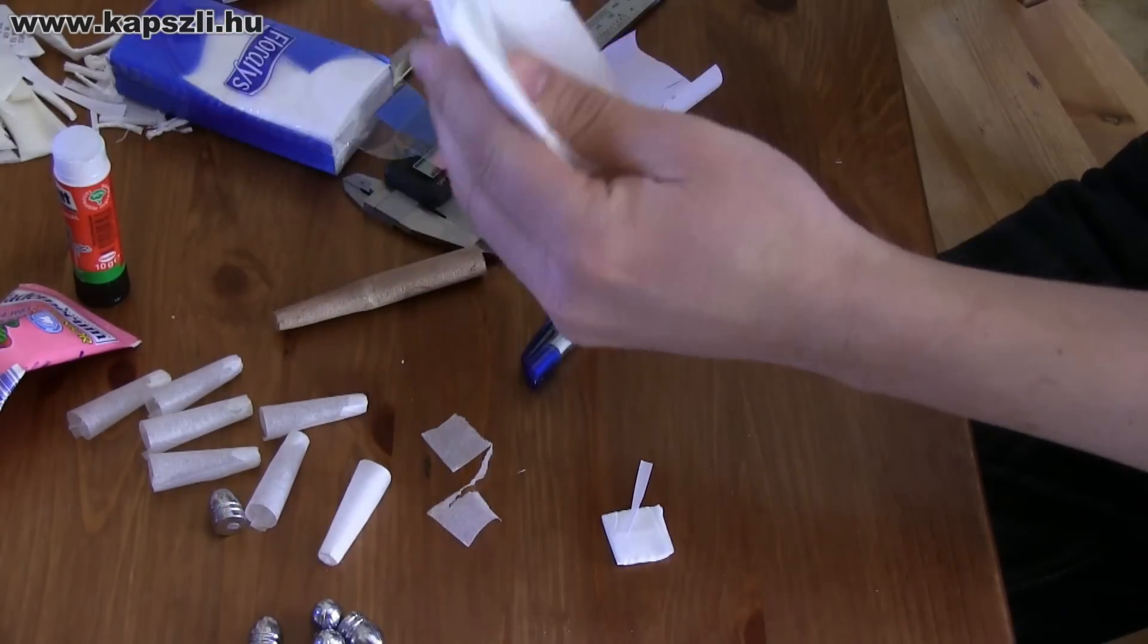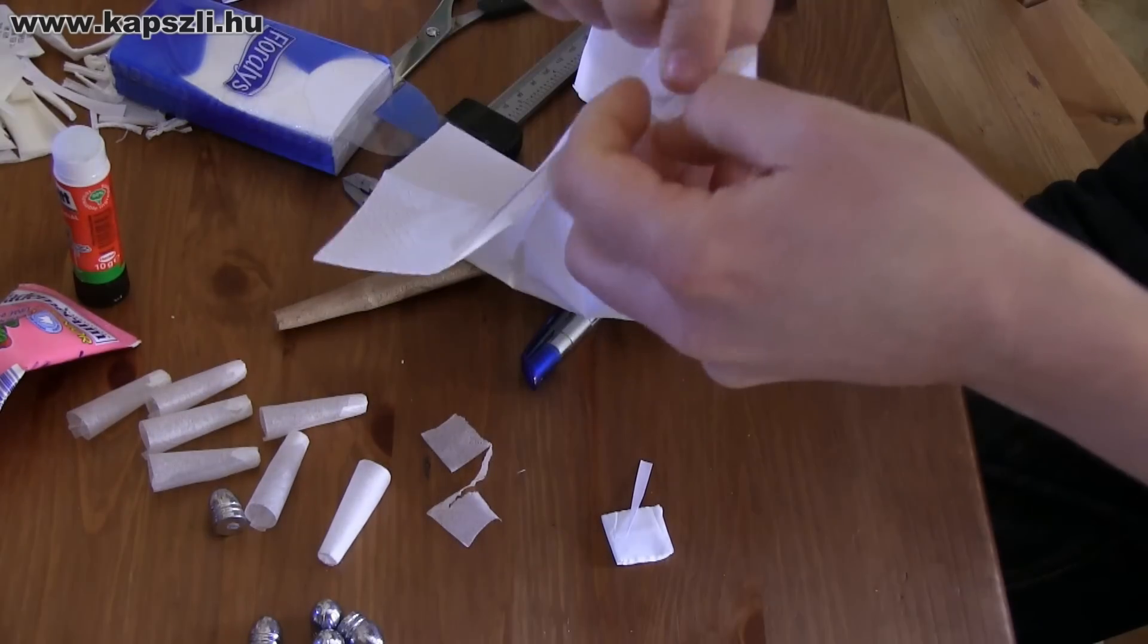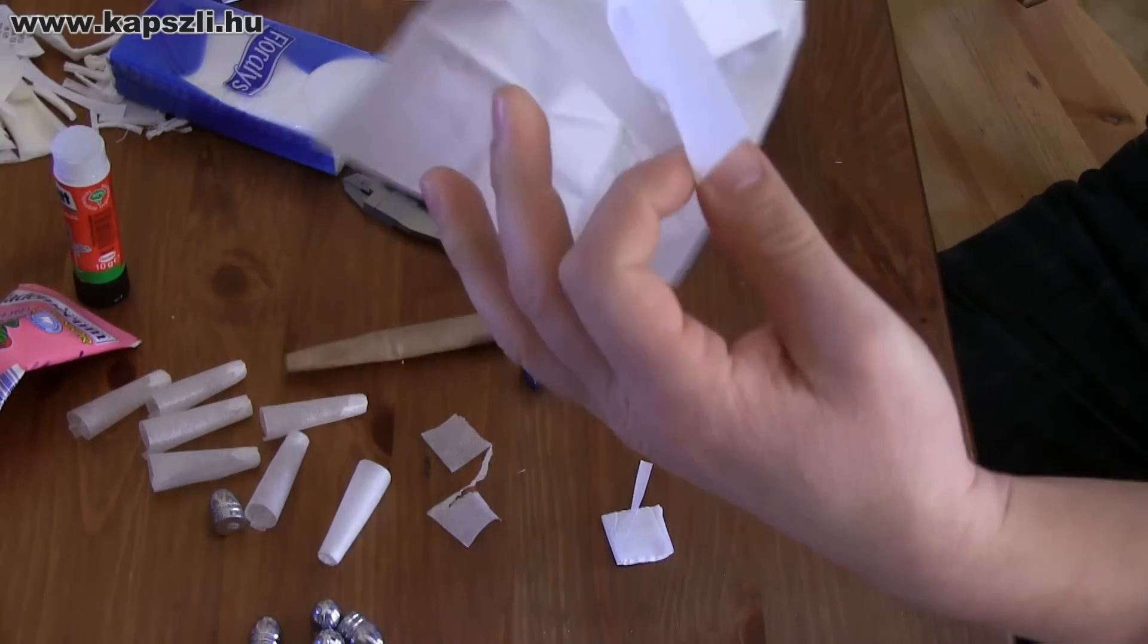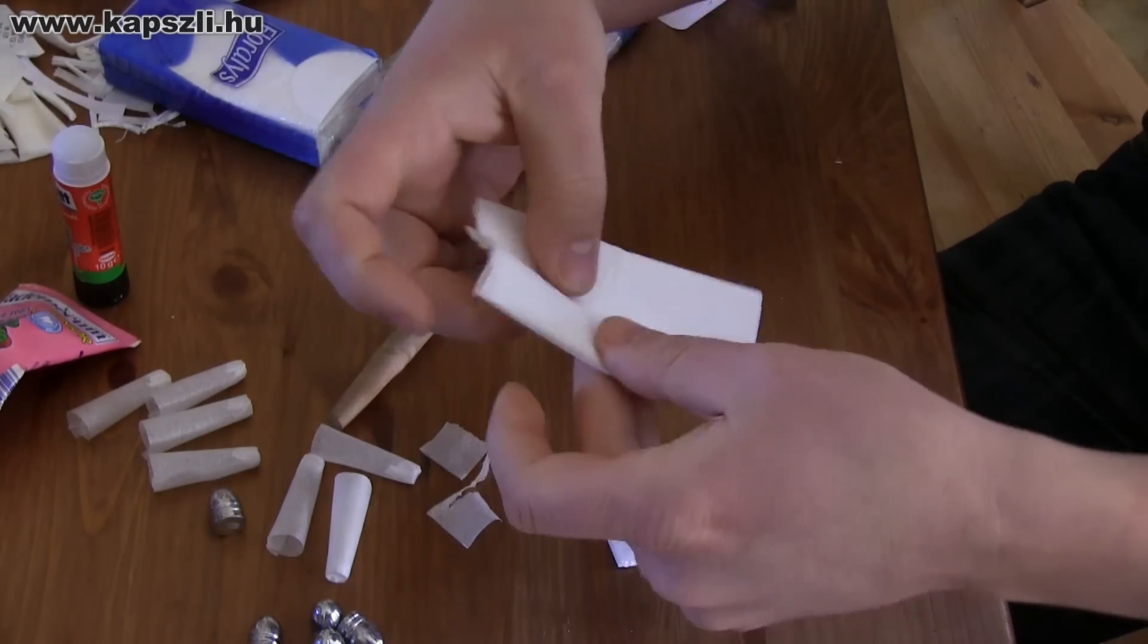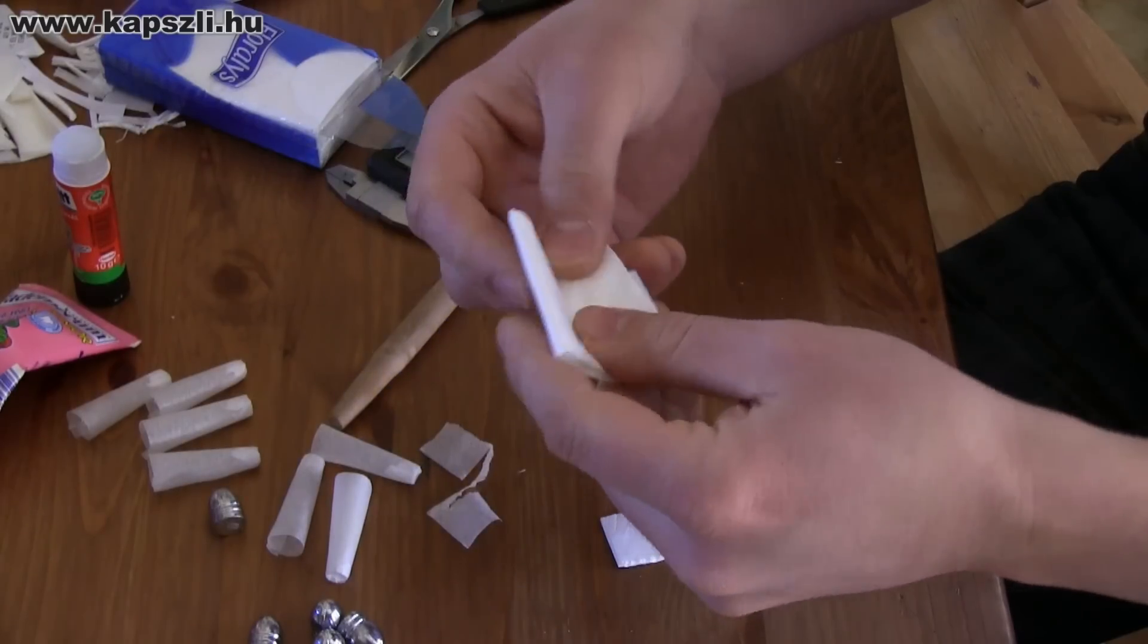Now it is time to make the end of the cartridge. I make this from normal tissue paper. The flash of the cap will have to break through here, so it must be thin. This is why I separate one layer and cut 1cm by 1cm squares from it.